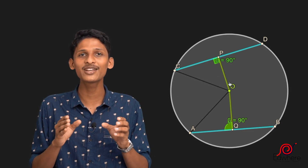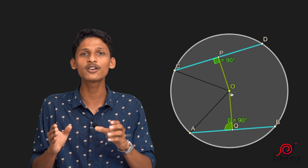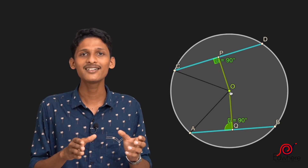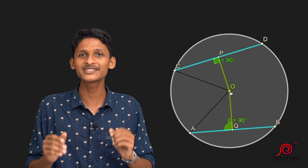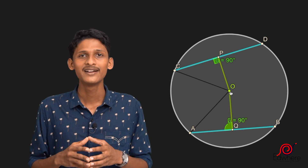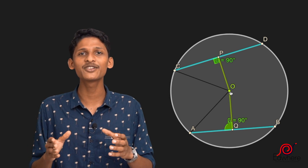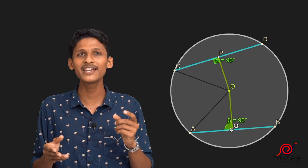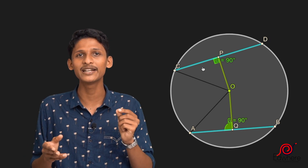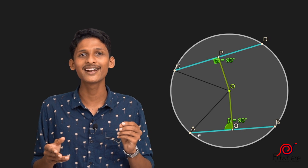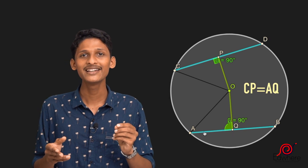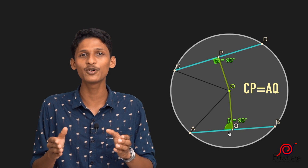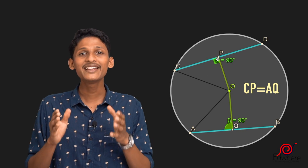Triangle OAQ is congruent to triangle OCP. All the angles are the same — they are congruent. These two triangles are congruent by three sides. In triangle OCP, CP is a side; in triangle OAQ, AQ is a side. Therefore, CP is equal to AQ.